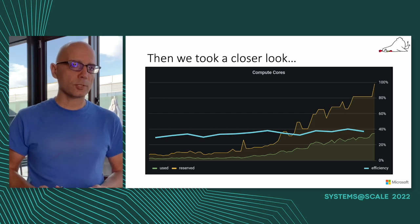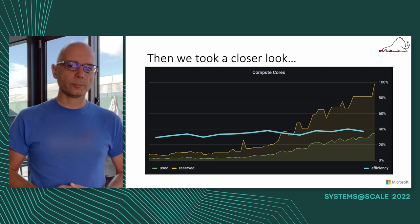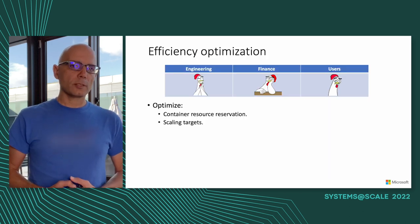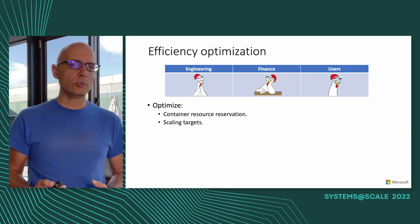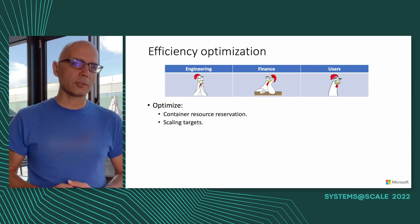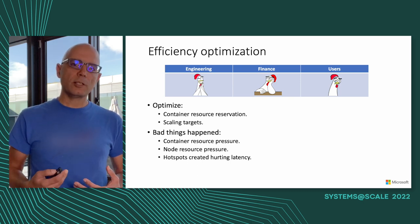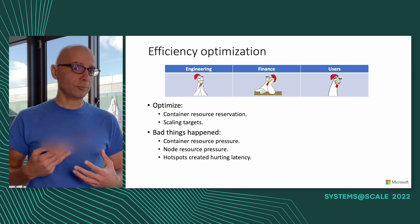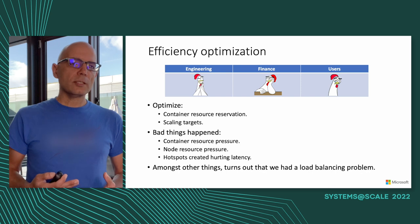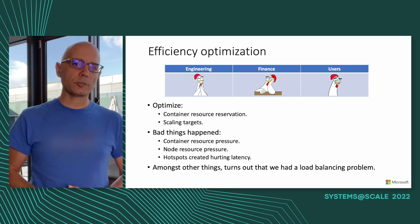We started looking at optimizing our efficiency. The simple approach — decrease resources given to a container and increase the autoscaler scale target — didn't work. We started seeing a lot of container pressure, where containers used more than they had asked for, causing CPU or GPU saturation on some nodes and creating hotspots. Hotspots are very bad for a real-time service. Looking deeply into our metrics, we realized we had a serious load balancing problem.